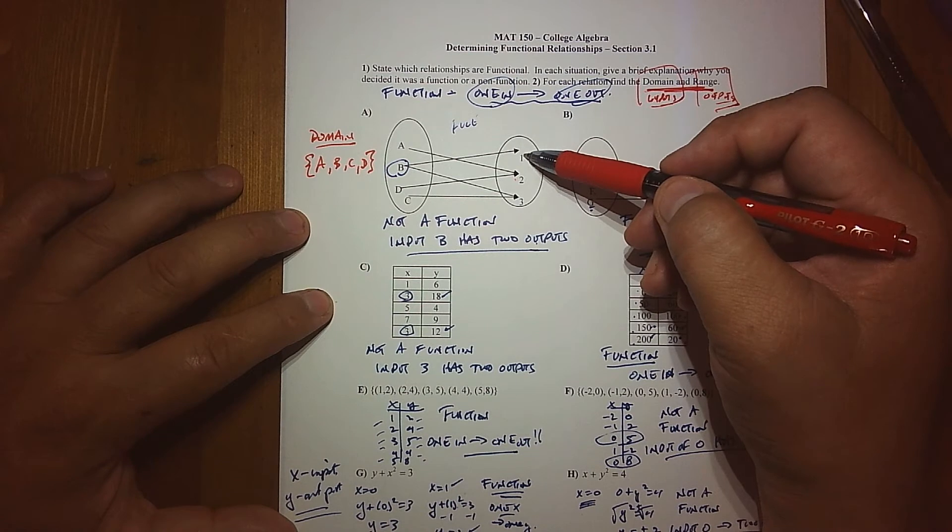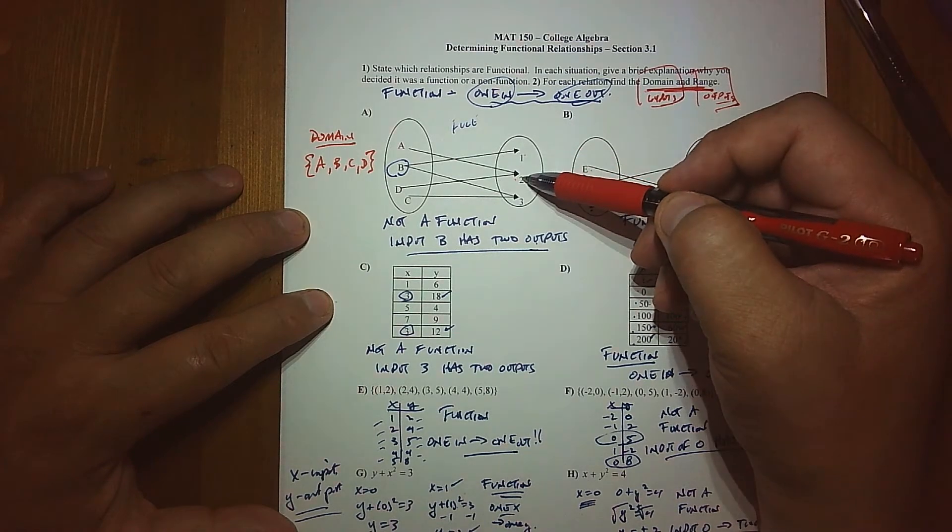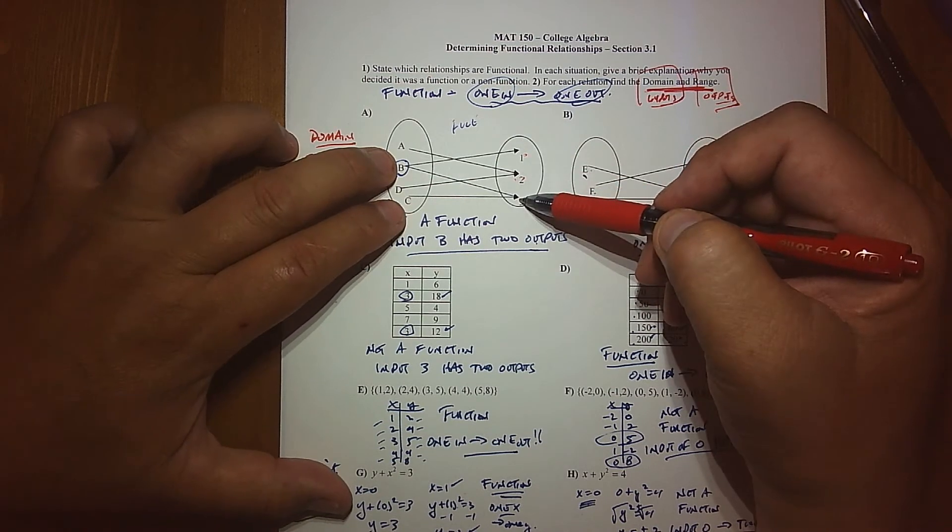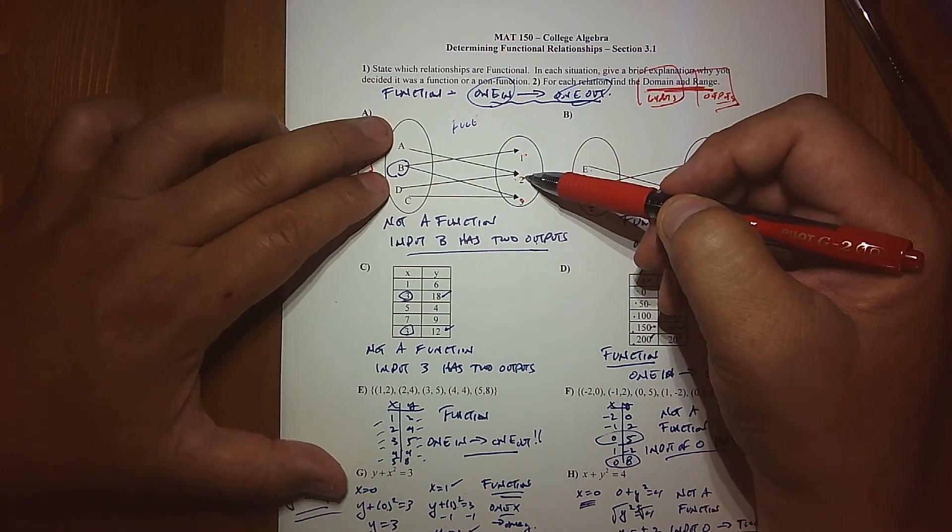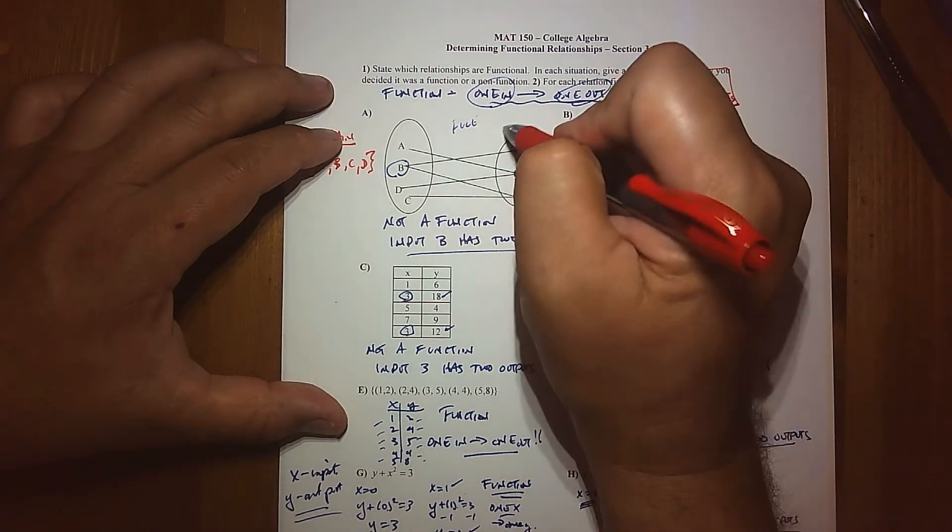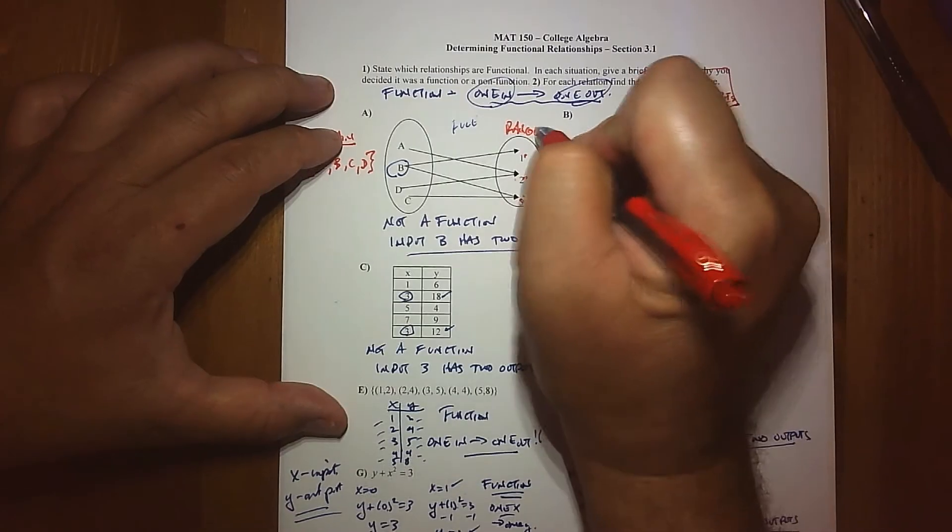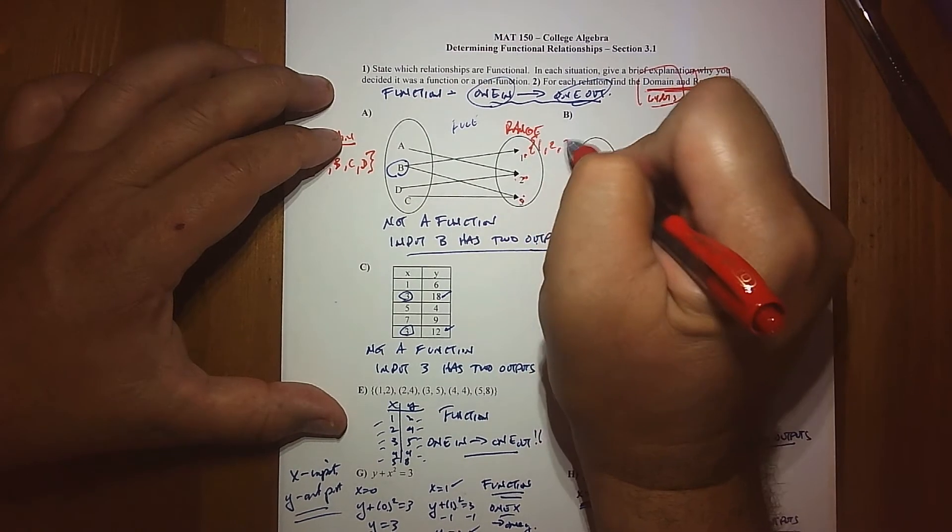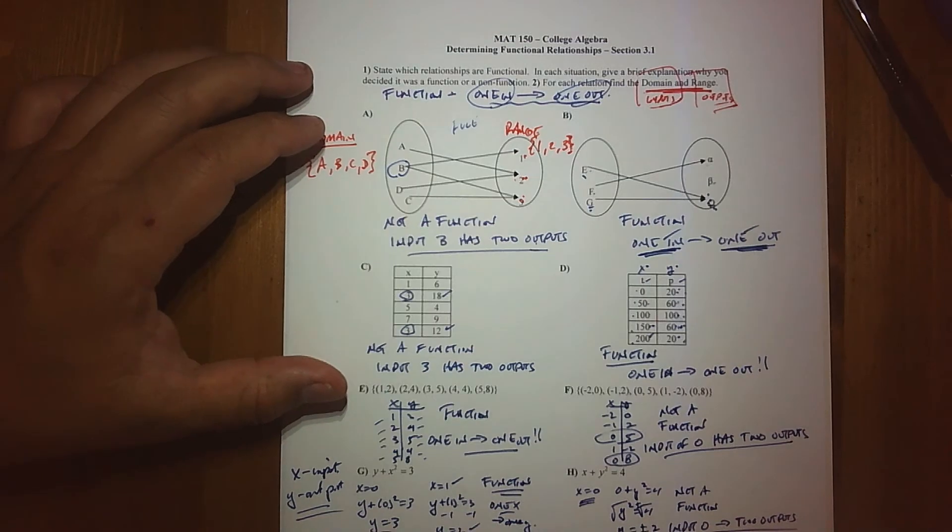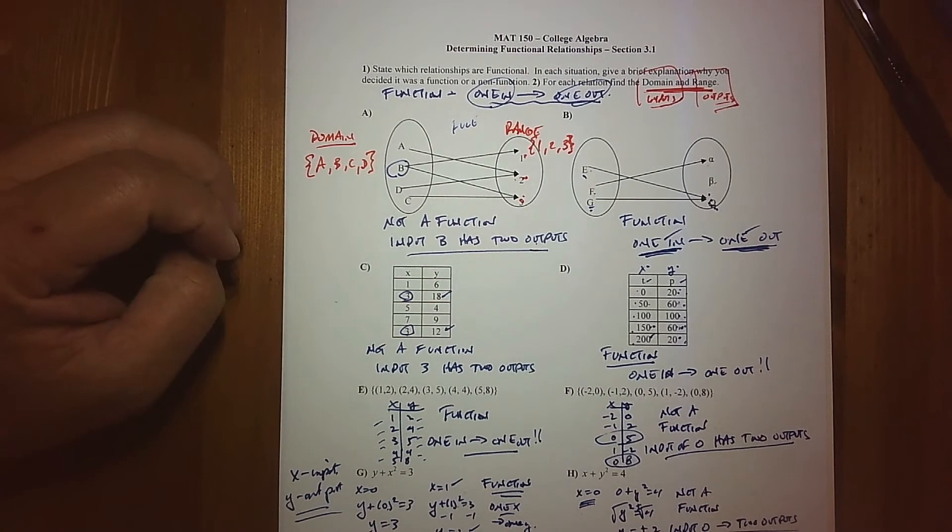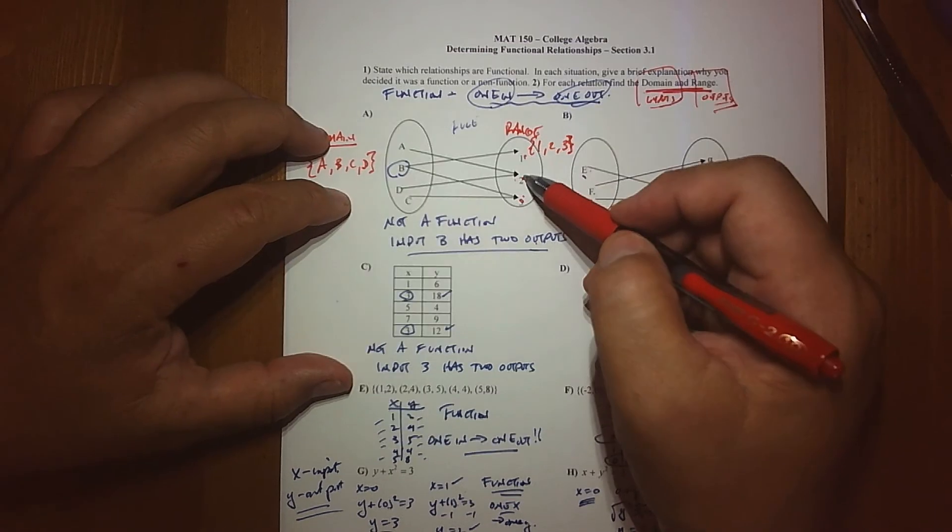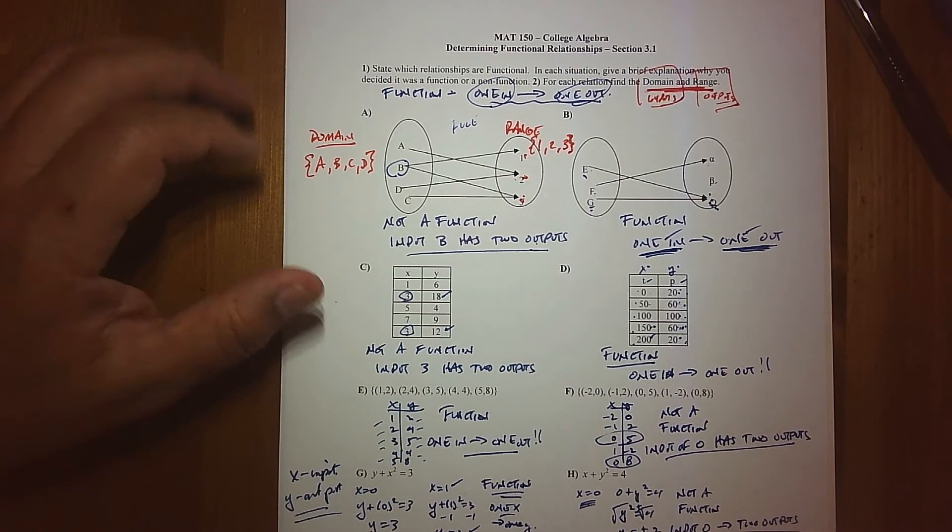Same thing with the range. When I look at the outputs, 1 is a possible output, 2 is a possible output, and 3 is a possible output. One was created by B, three was created by B and C, two was created by A and D. So they are outputs that are being created. So my range in this case would be discrete. I'm not talking about everything between 1 and 3, like 1.2, 1.7, 2.8. I'm just distinctly talking about 1, 2, and 3.